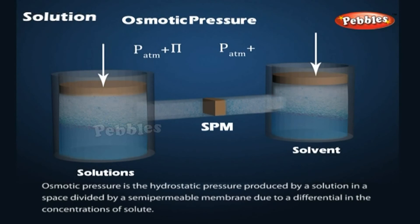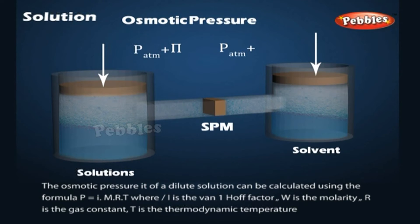Osmotic pressure is the hydrostatic pressure produced by a solution in a space divided by a semi-permeable membrane due to a differential in the concentrations of solute. The osmotic pressure, π, of a dilute solution can be calculated using the formula π = iMRT, where i is the Van't Hoff factor, M is the molarity, R is the gas constant, and T is the thermodynamic temperature.